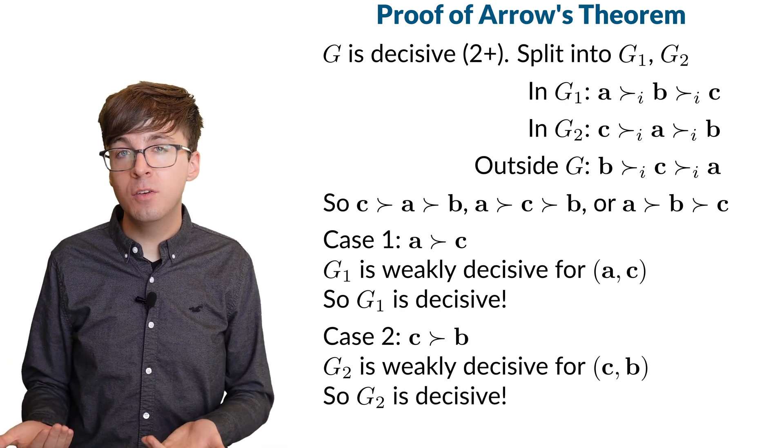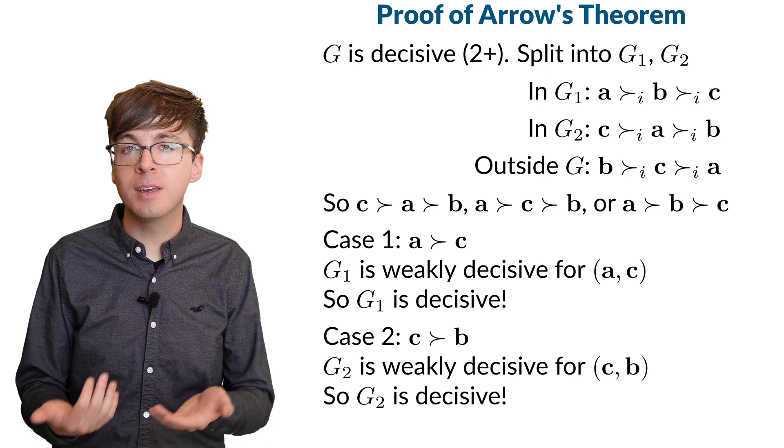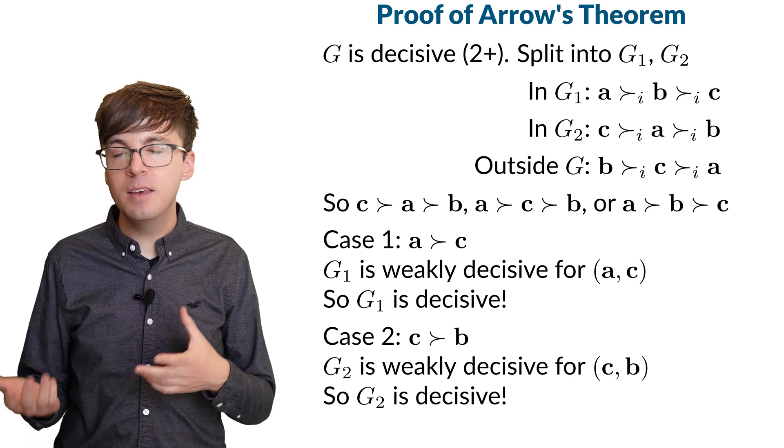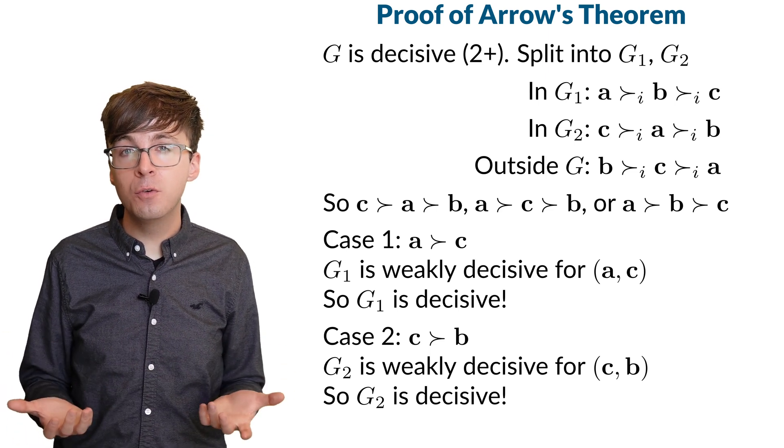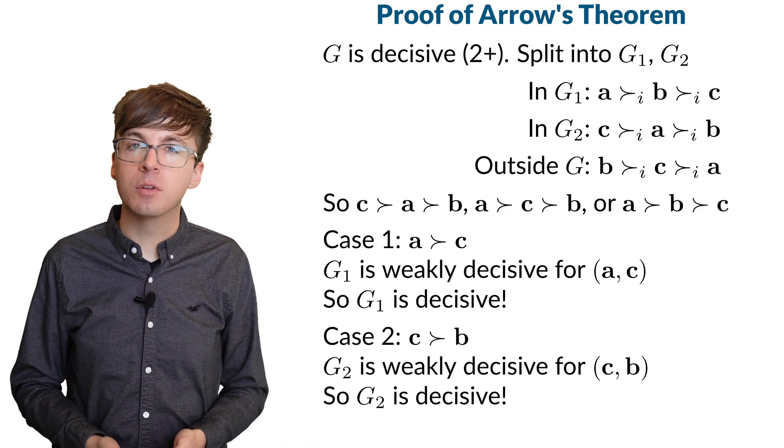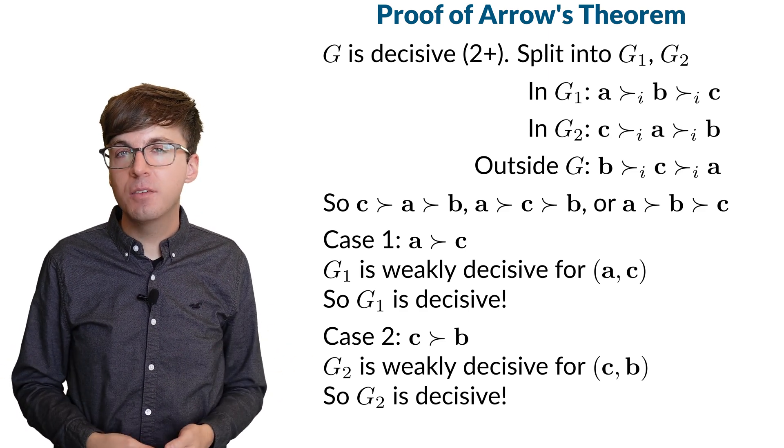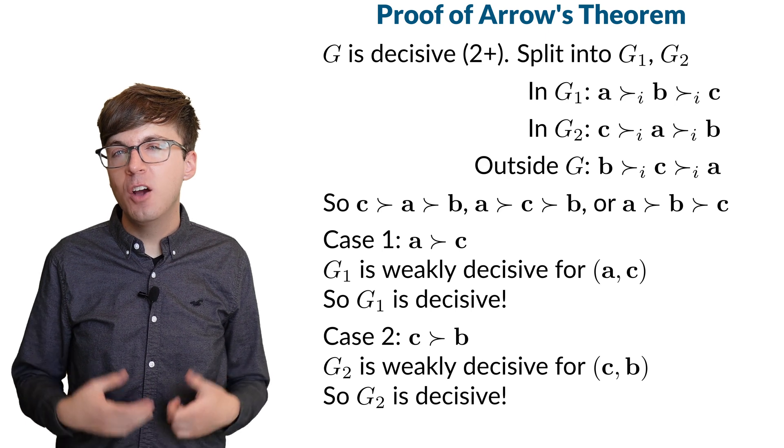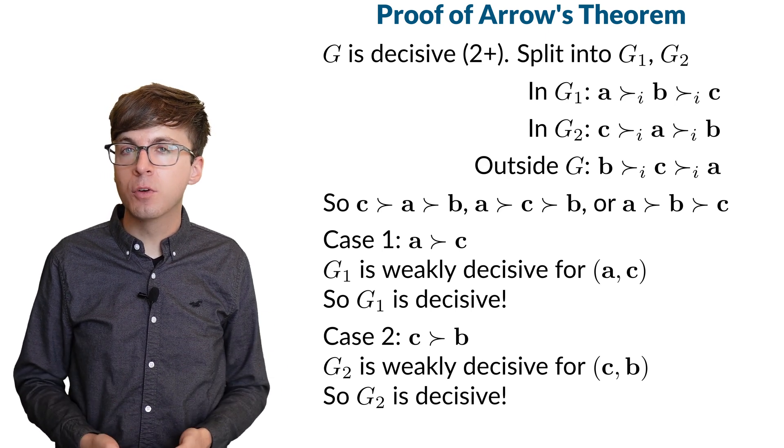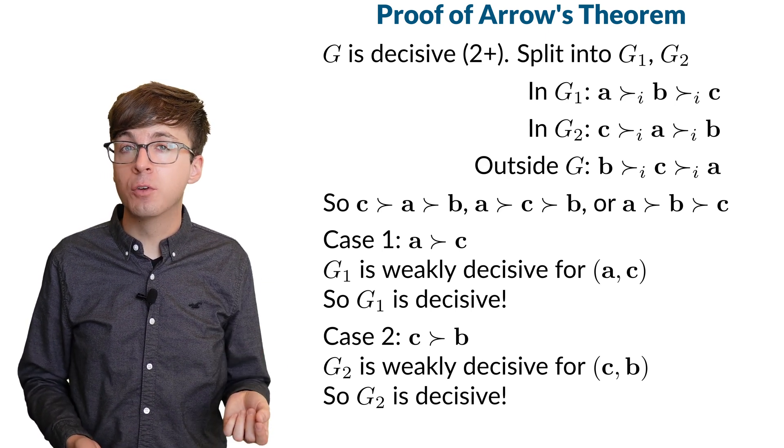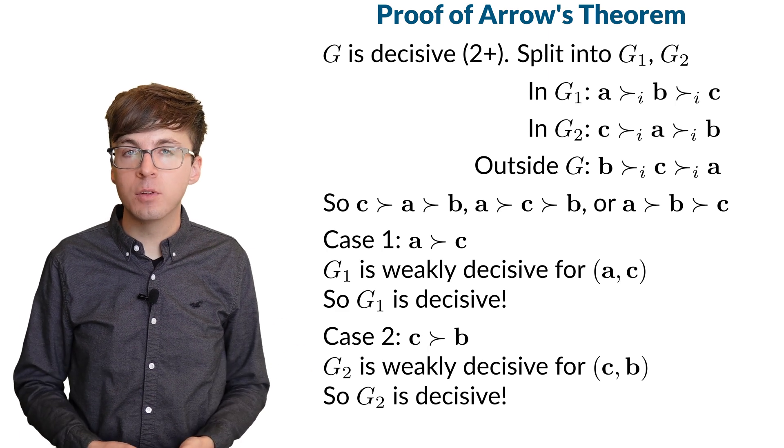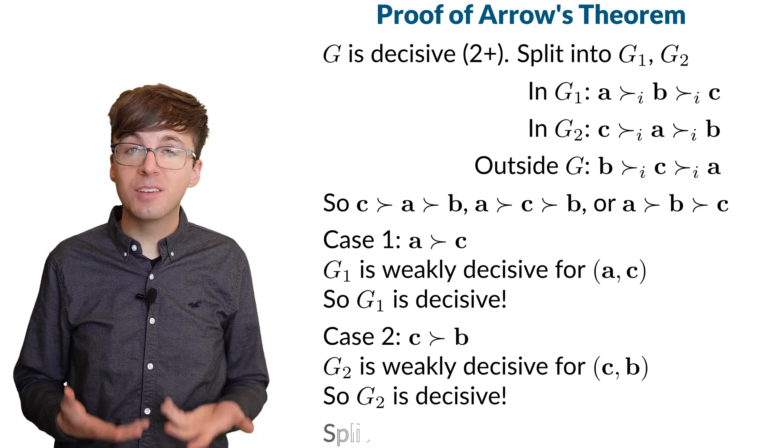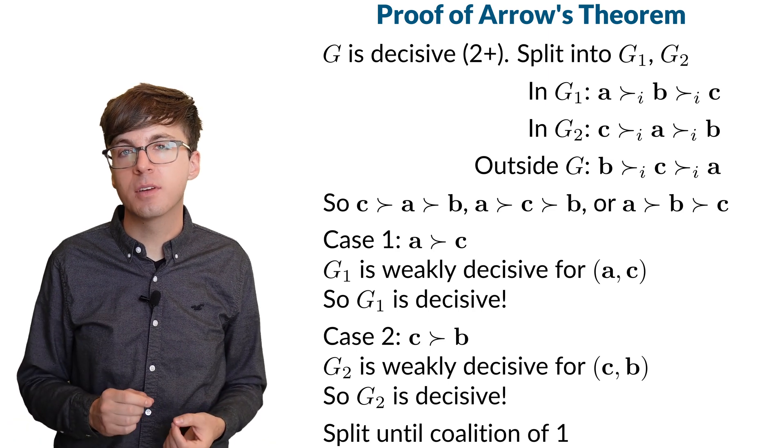And then again, we apply our lemma to see that G2 would be a decisive coalition in this case. So at least one of G1 and G2 must be a decisive coalition. Given any decisive coalition of at least two people, we can split it into two smaller groups, and at least one of those groups is still a decisive coalition.